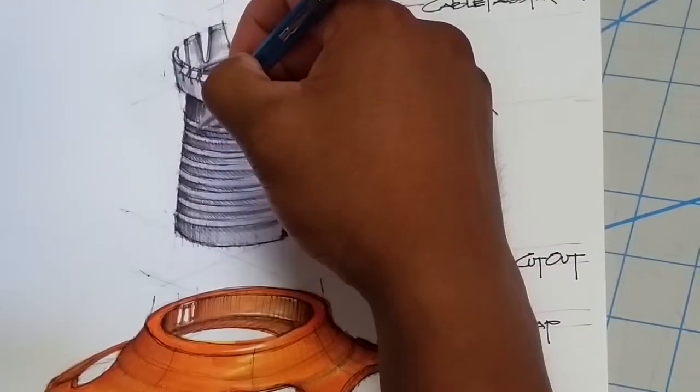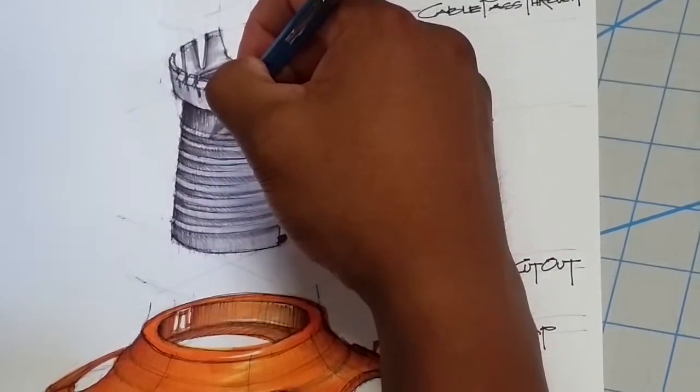One of the things that we really enjoy at Doug Mockett & Company, we're always designing and we're always developing new products. At any one time we have 20 to 50 new products in development.